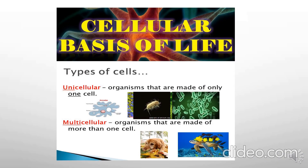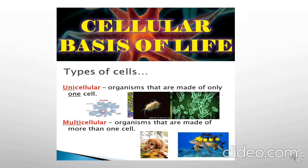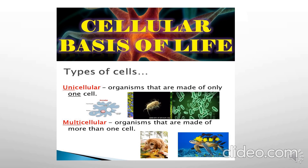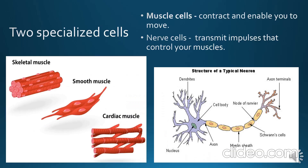The cellular basis of life is part of the unifying themes of life. All organisms are made up of cells — the cell is the basic unit or building block of life. If an organism is made up of only one cell, it is called unicellular; if made up of many cells, it is called multicellular. Most multicellular organisms have specialized cells: muscle cells contract and enable movement, while nerve cells transmit impulses that control muscles.